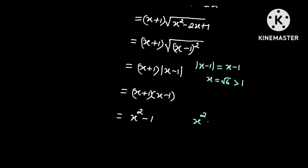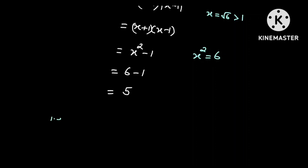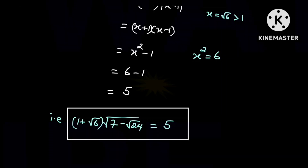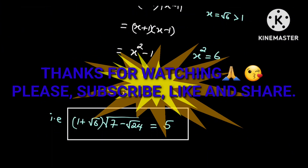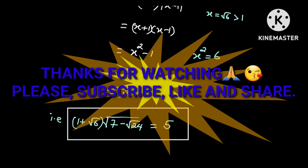But we know x squared is equal to 6, and so this is equal to 6 minus 1, and the answer is 5. That is, 1 plus the square root of 6 multiplied by the square root of 7 minus the square root of 24 is equal to 5. In order not to miss any of our videos, make sure to subscribe.